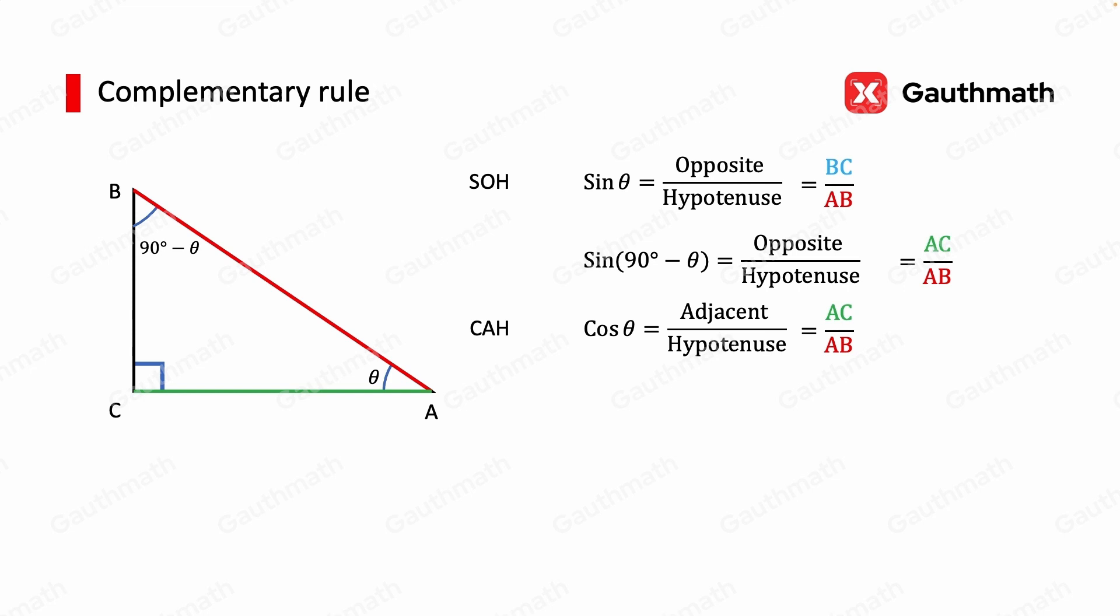Cosine of 90 minus theta would be the adjacent over hypotenuse. In our case, it's BC over AB. Notice both sine theta and cosine of 90 minus theta equal BC over AB. That's our first part of the complementary rule: sine theta equals cosine of 90 minus theta.